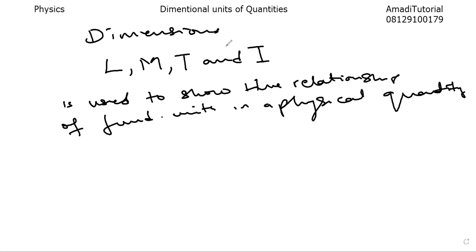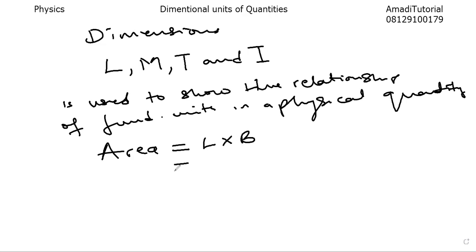So when you talk about unit dimensions, you are simply looking at how you use these four fundamental quantities to represent the relationship, to show the way they relate in other quantities or derived quantities. For instance, if you talk about area, the formula for area is length times breadth. Since breadth is also a length, this is length times length, which equals length squared. So the dimensional unit for area is capital L raised to the power of two.